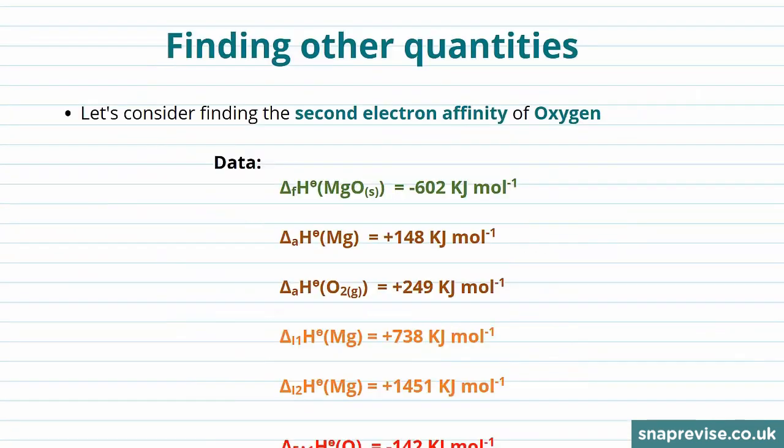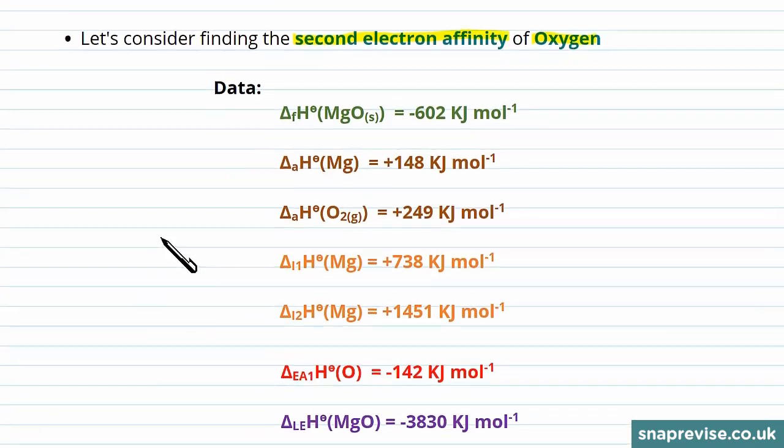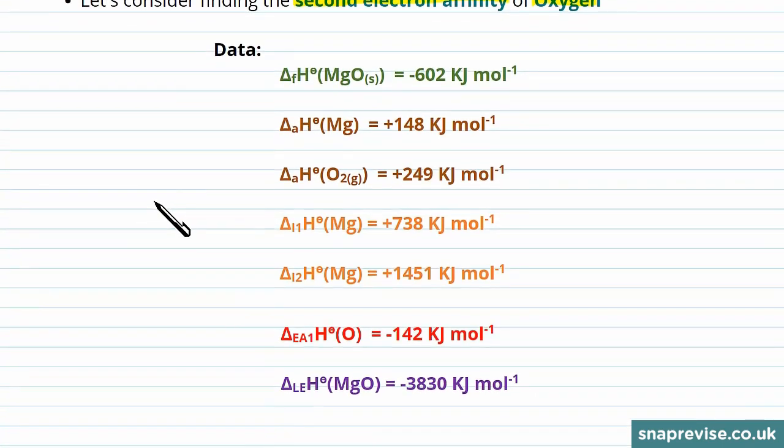Now we've seen how Born-Haber cycles can be used to find the lattice energy, let's consider how we could find some other quantities. For example here we'll be looking at the second electron affinity of oxygen. Again, the best way to see how these sort of calculations can be done is to work through an example. So we're given our data to start with.